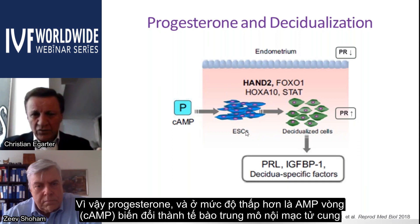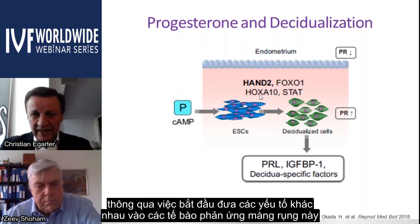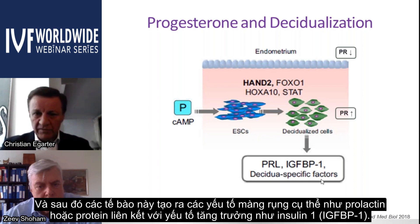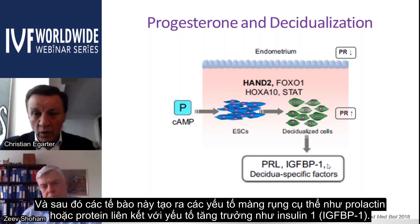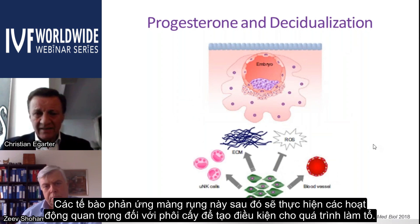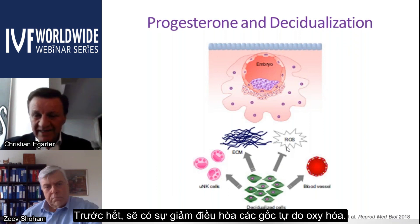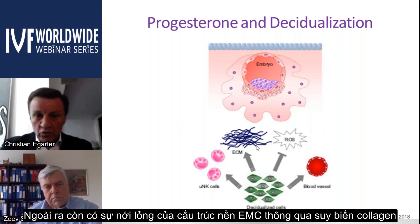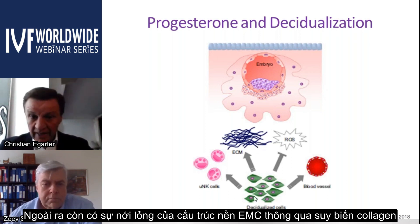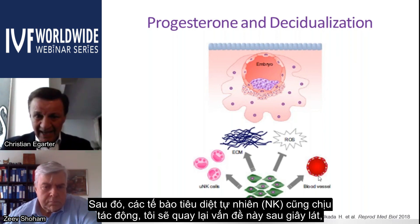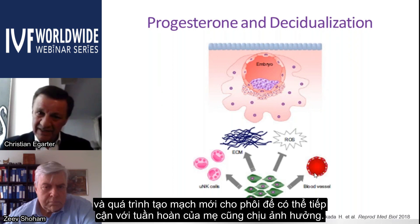Progesterone, and to a lesser extent cyclic AMP, transforms endometrial stromal cells into decidual cells by initiating different factors. These decidualized cells produce decidua-specific factors such as prolactin and insulin-like growth factor binding protein 1. They then exert activities important for the implanting embryo: down-regulation of reactive oxygen species, loosening of the extracellular matrix by collagen degradation, influence on natural killer cells, and support of neovascularization for the embryo to access maternal circulation.